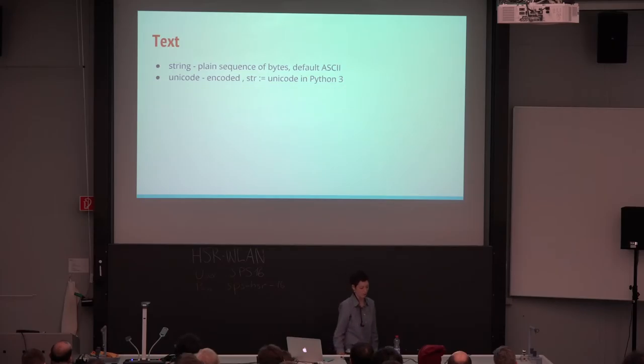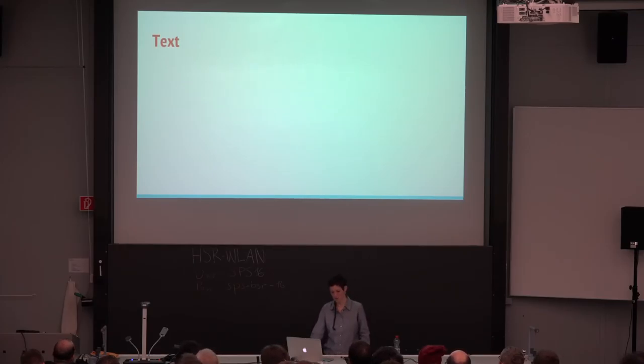So in Python 2.7, we have the string, which is plain sequence of bytes. And this is sometimes hurtful. We also have Unicode, but we have to tell the program we are using Unicode. And this is encoded and therefore we can have more combinations than 256. And in Python 3, the basic string is actually Unicode. So it's more stable in that way. Let's see some examples.